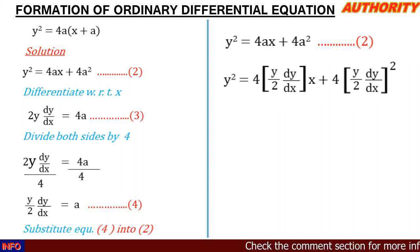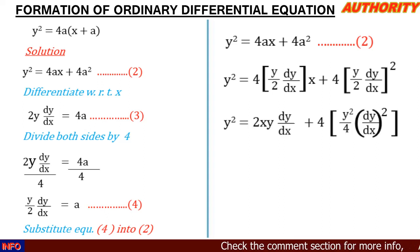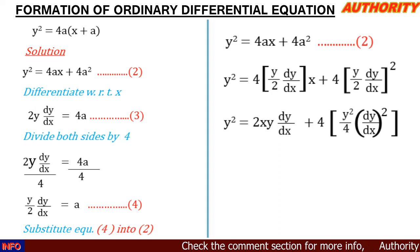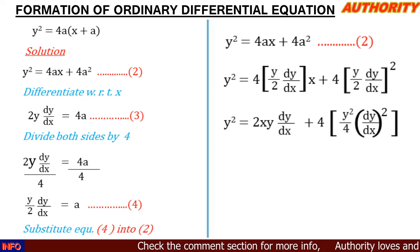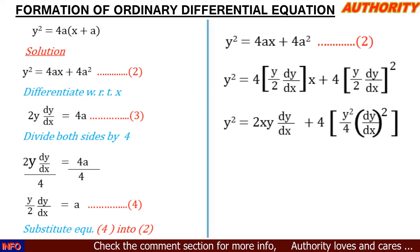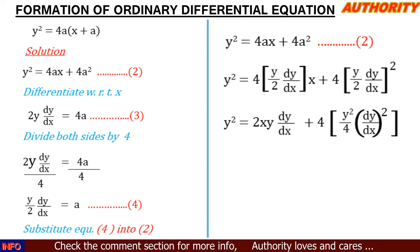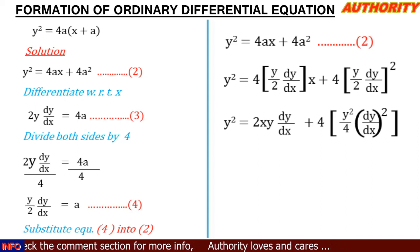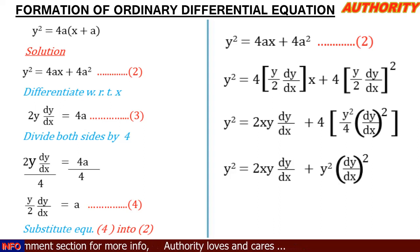Now let's open the brackets. When 4 multiplies y/2, we get 4/2 = 2, so the first term gives us 2xy·dy/dx. For the second term, we distribute the power 2 to all elements in the bracket: y²/2² = y²/4, multiplied by (dy/dx)². The 4 outside cancels the 4 in the denominator. So we have y² = 2xy·dy/dx + y²·(dy/dx)².